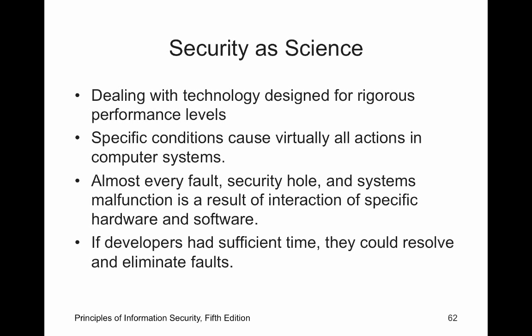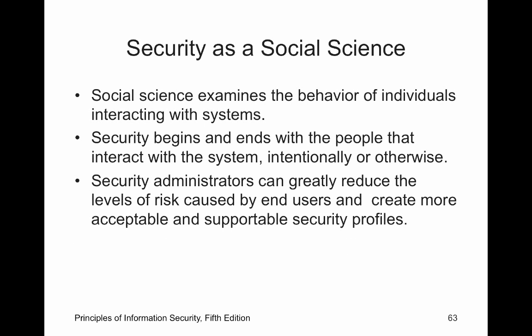As a science, we can work with technology at different performance levels, look at our baselines, and see how everything works together. Almost every fault or security system is functioning as a result of the interaction of specific hardware and software. There's also the social science aspect — it examines the behaviors of individuals interacting with the system, whether they are maintaining policies and interacting correctly. Security begins and ends with the people that interact with the system, intentionally or otherwise — whether they're end users or people trying to break in.